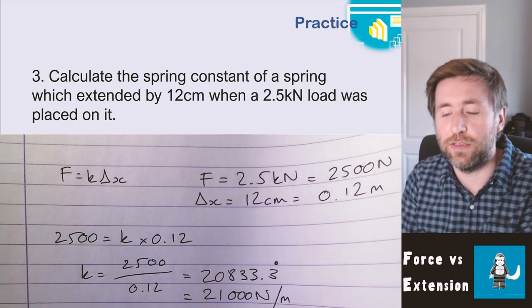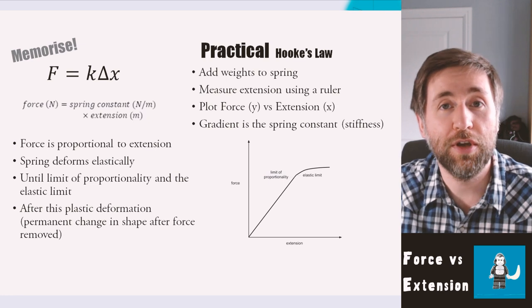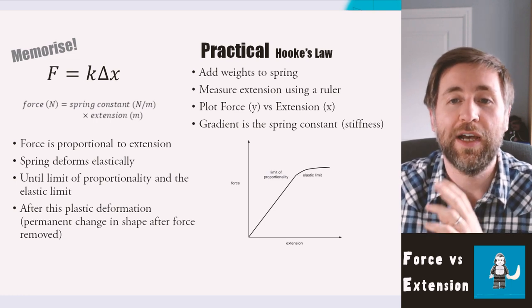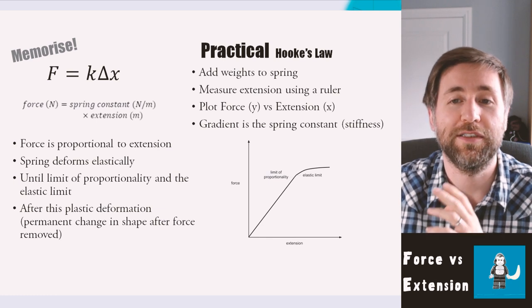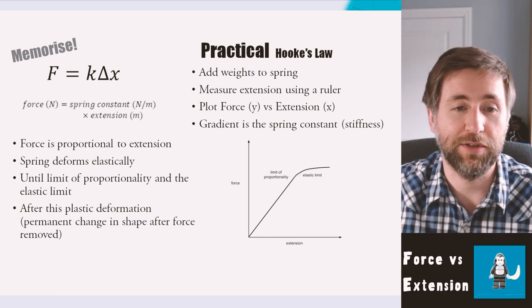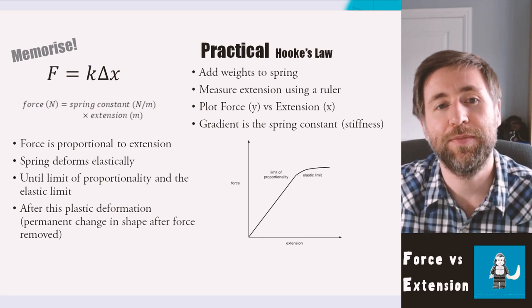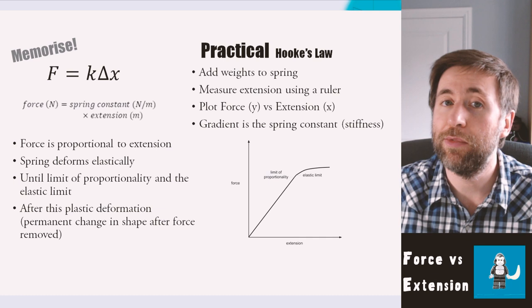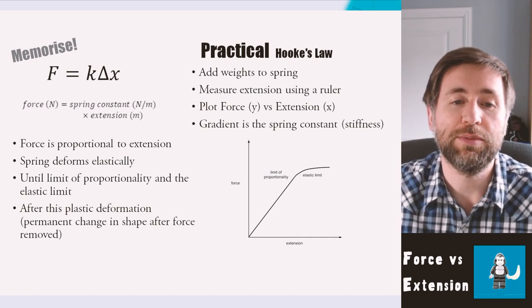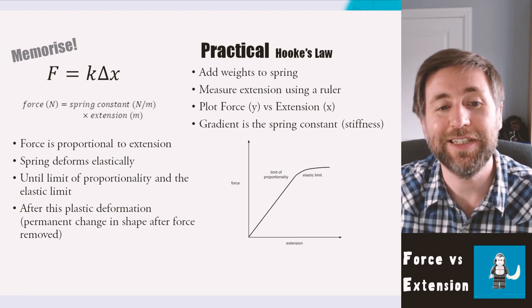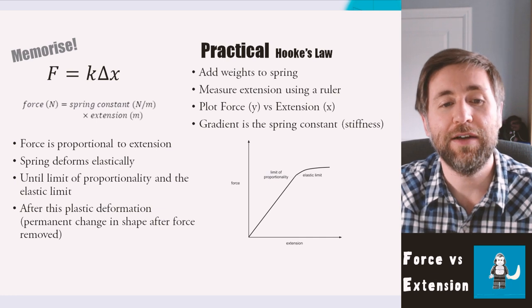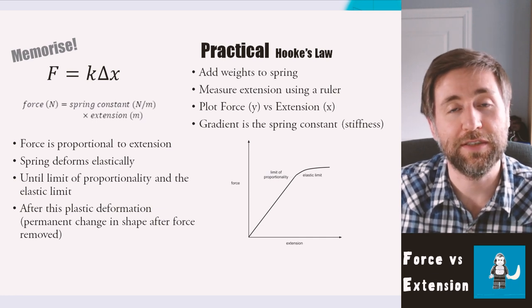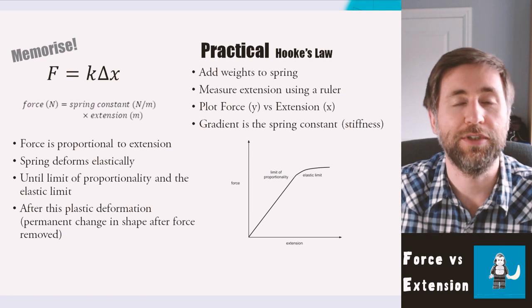Here's a summary of everything you should know. Keep your methods simple: add weights to the spring, measure extension using a ruler, plot force on the y-axis and extension on the x-axis, the gradient is the spring constant. Hooke's Law as an equation is F = kΔx — you need to memorize this for your GCSE exam. Hooke's Law states force is proportional to extension; the spring deforms elastically until the limit of proportionality and then the elastic limit. After this you get plastic deformation — a permanent change in shape after the force is removed.